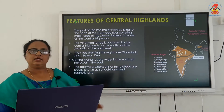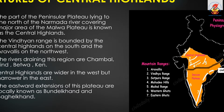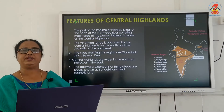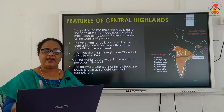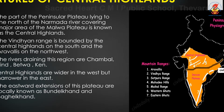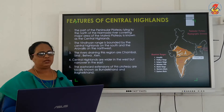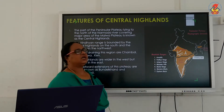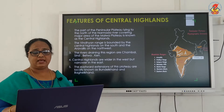The central highlands are drained by four important rivers: Chambal, Sindh, Betwa, and Ken. The central highlands are wider in the west and narrower in the east. The eastward extension of this plateau is known as Bundelkhand.